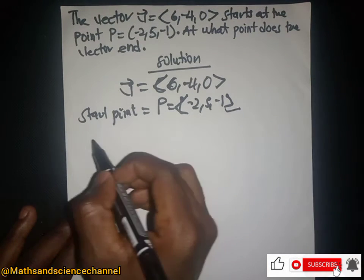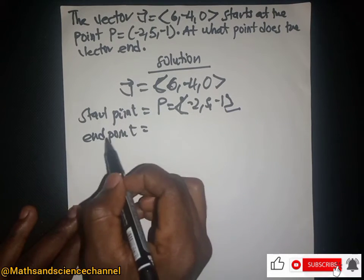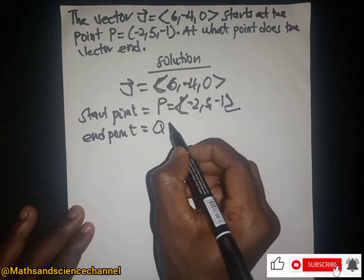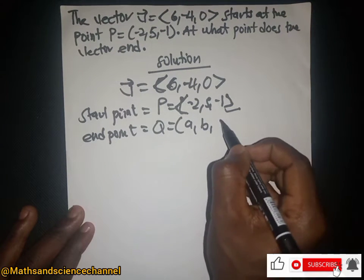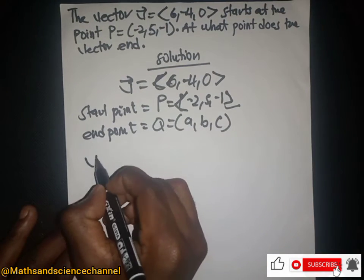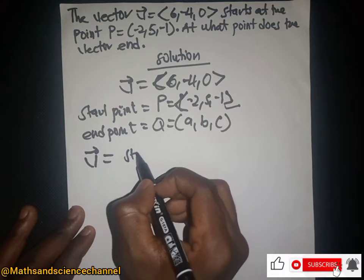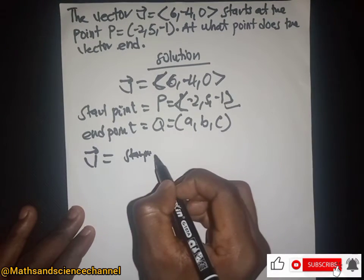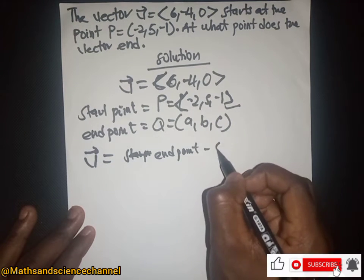So let's equate this endpoint coordinate to, let's say, Q here and let's have coordinates like a, b, and c. So if that is the case, then the general vector V here will be equal to the end point minus the start point.